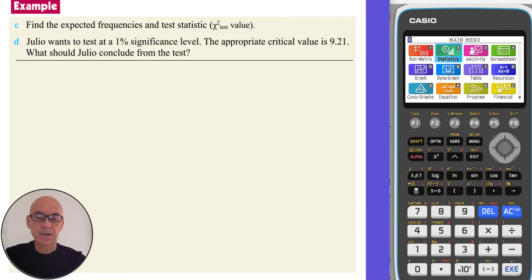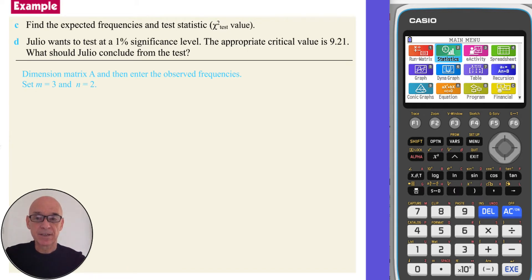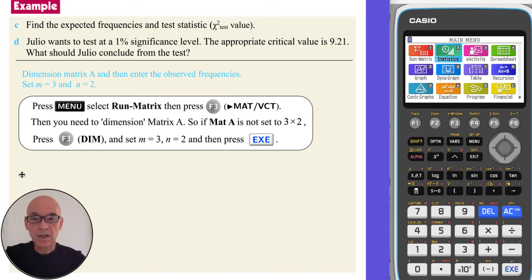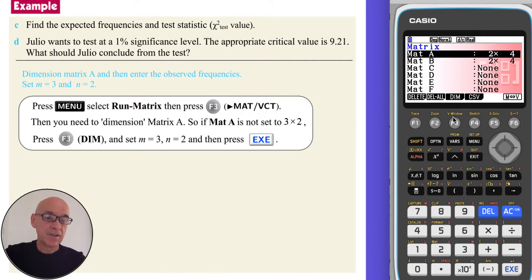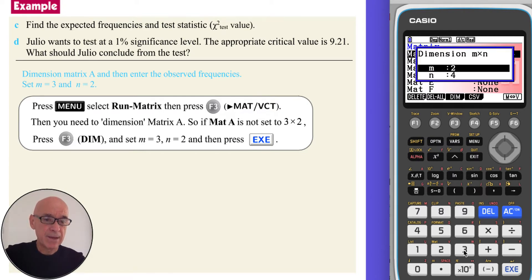In part C, we're asked to find the expected frequencies and the test statistic. To do both tasks, we need to enter the observed frequencies into our calculator. We first need to dimension matrix A. From your calculator, press menu, select option one for run matrix, followed by F3 to get to the matrix menu, then another F3. Matrix A is currently two by four, so we need to redimension it to three by two — change M to equal 3 and N to equal 2, and press execute.